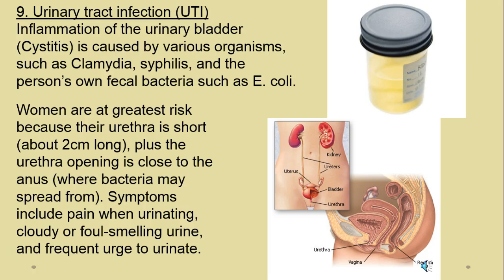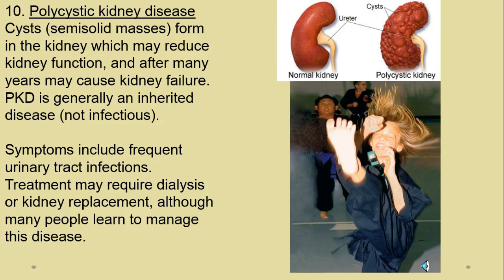Polycystic kidney disease — 'poly' means many, so these are multiple cysts. It tends to be an inherited genetic disease, not something acquired over time. Those cysts begin interfering with the nephrons, leading to kidney failure symptoms. Symptoms are variable but include frequent UTIs. Treatment is usually dialysis or hopefully kidney transplant. Many people learn to manage it — for example, one world champion karate competitor has polycystic kidney disease.